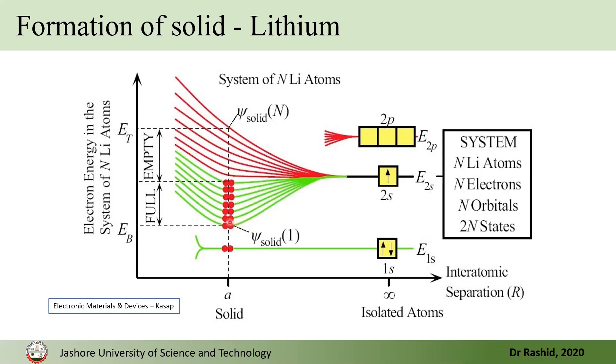So, in that case, the spacing between the orbitals is very small. And, for the practical use, we call this as a band. And, the half of the band is full and half of the band is empty in the case of lithium.